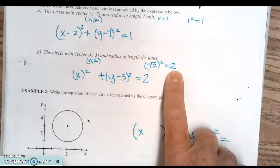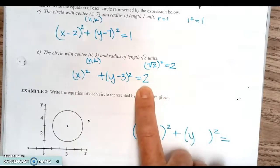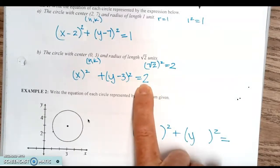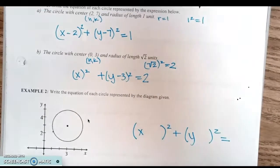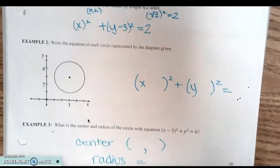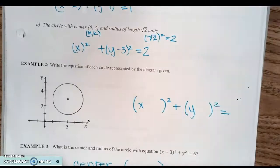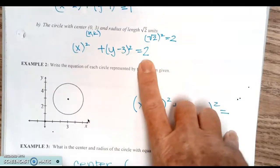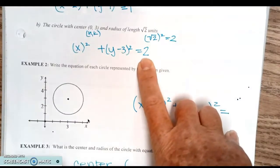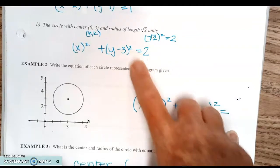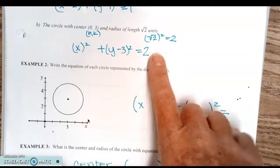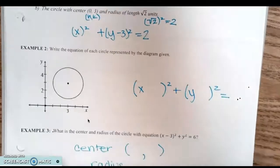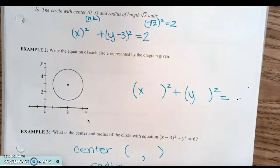Basically, the number 2 gets plugged into the equation. If you see a number in your equation that's not a perfect square, just express the radius as the square root of it — you may need to simplify, but just take the square root.